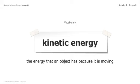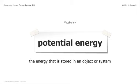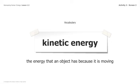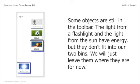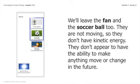Let's take a look at the two definitions. Kinetic energy is energy that is moving, whereas potential energy is energy that is stored in an object or system that can move. Kinetic is when it's actually moving, and potential is when it has the ability to move. So you're going to organize some of these bins again.